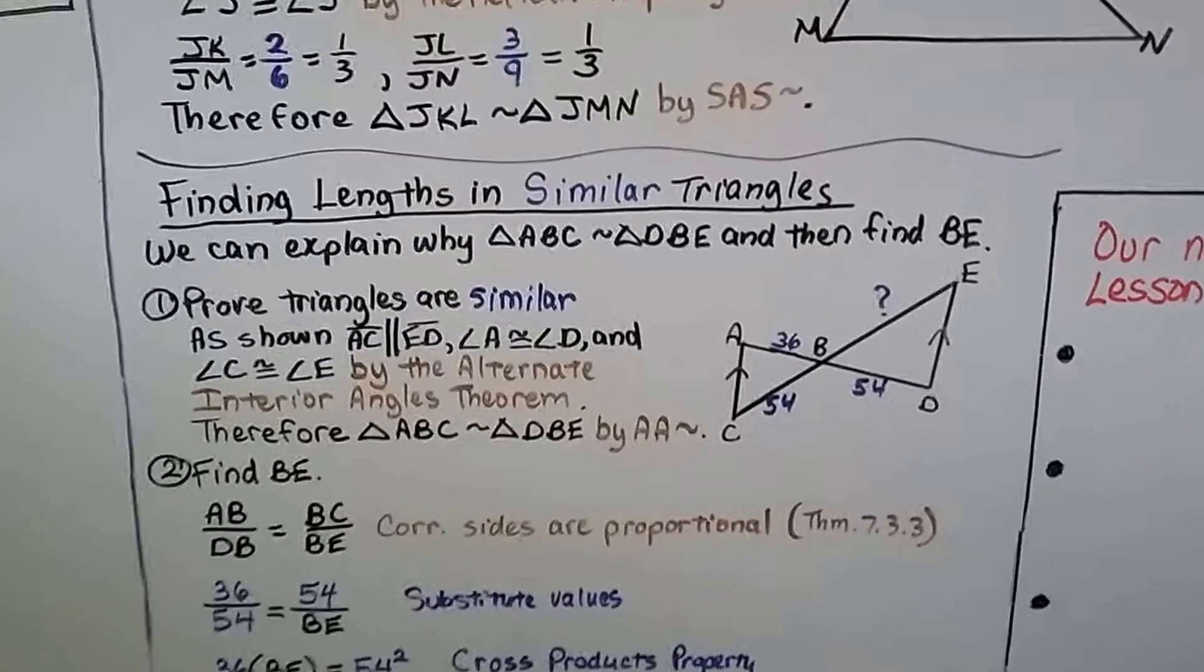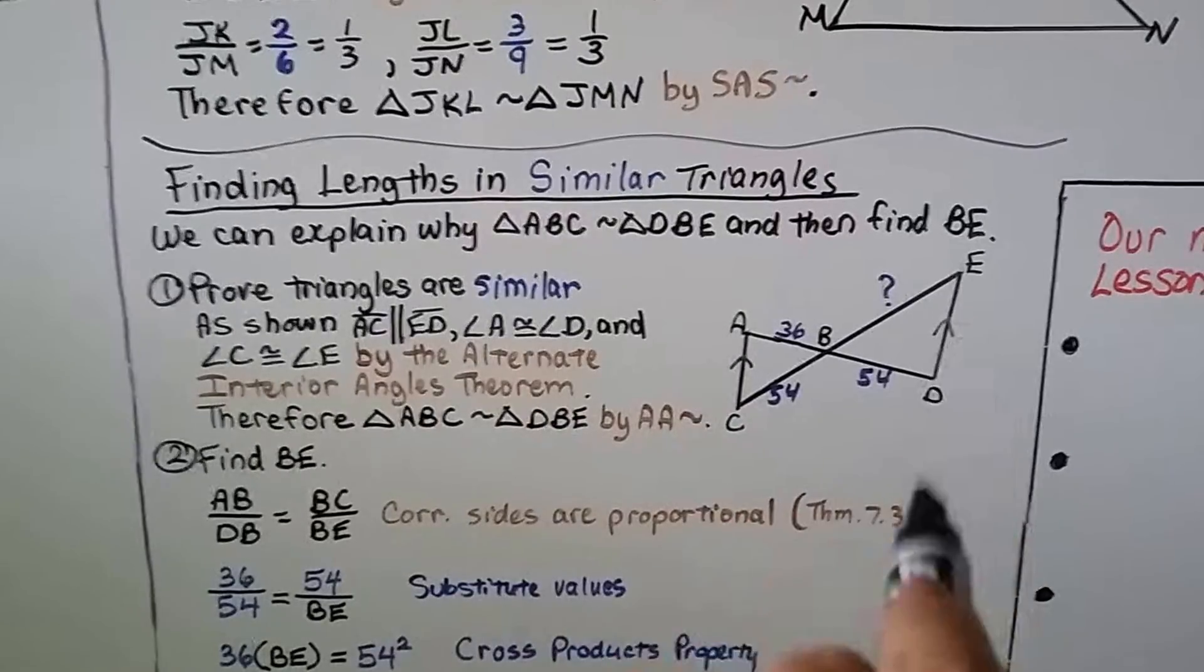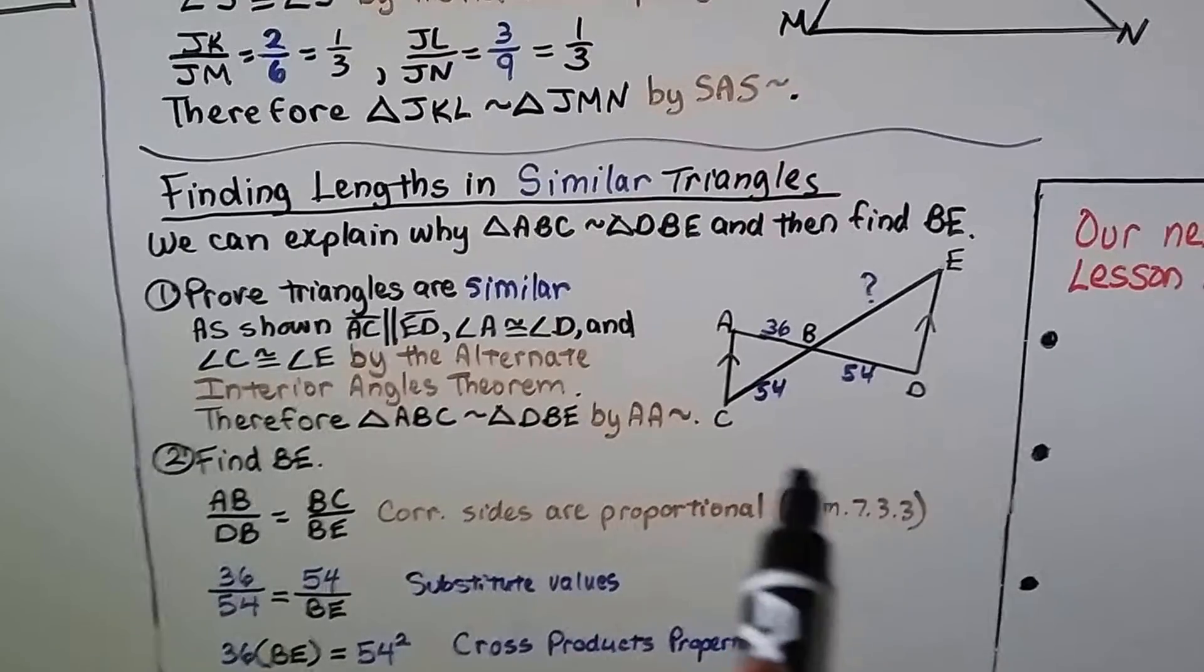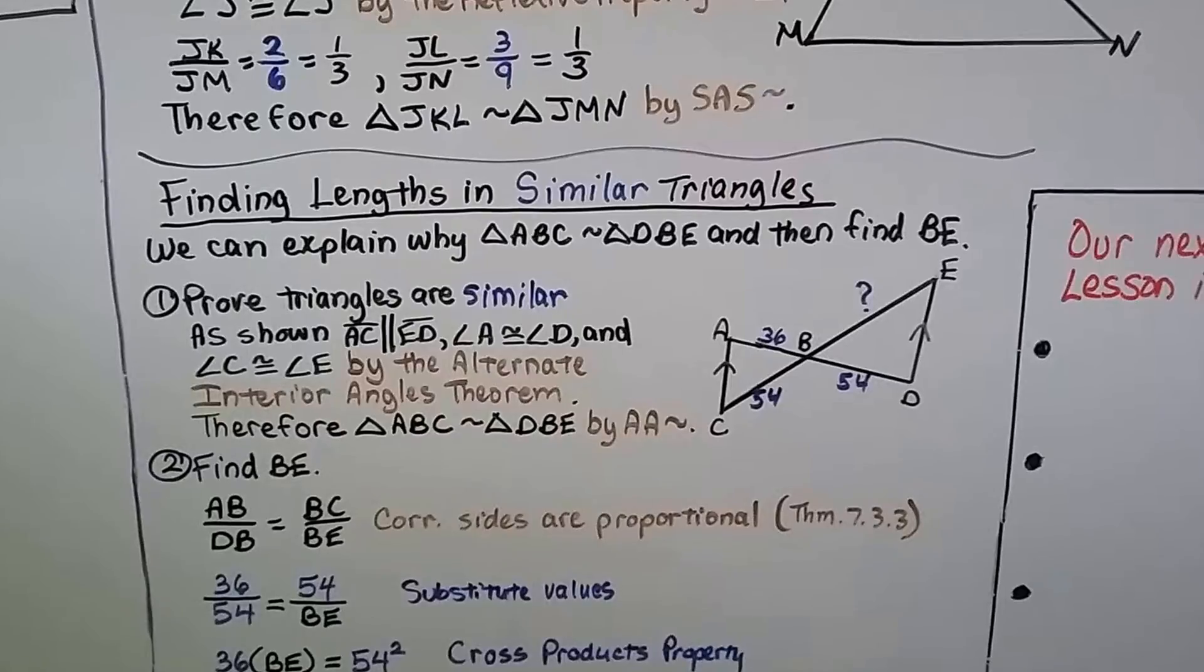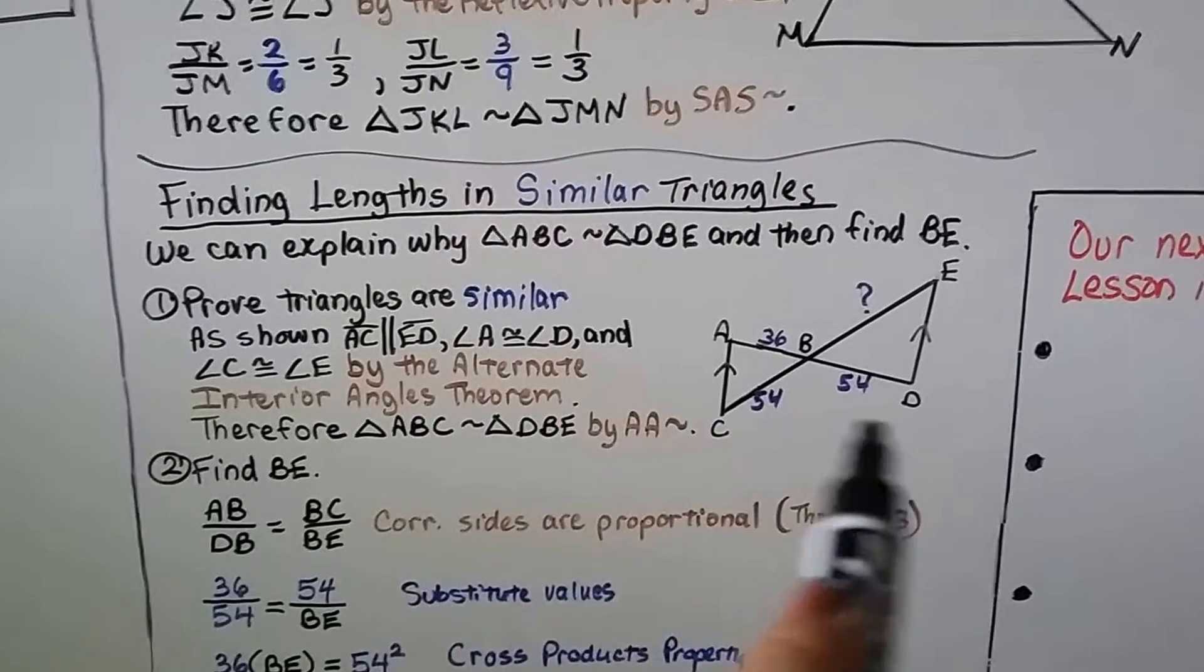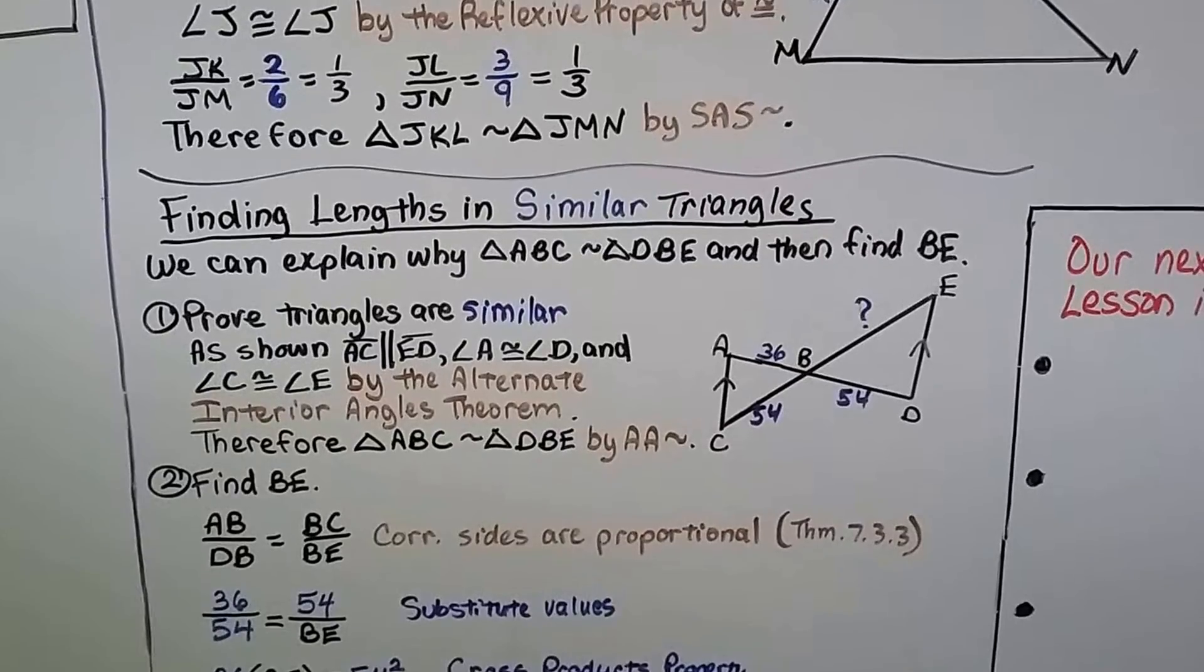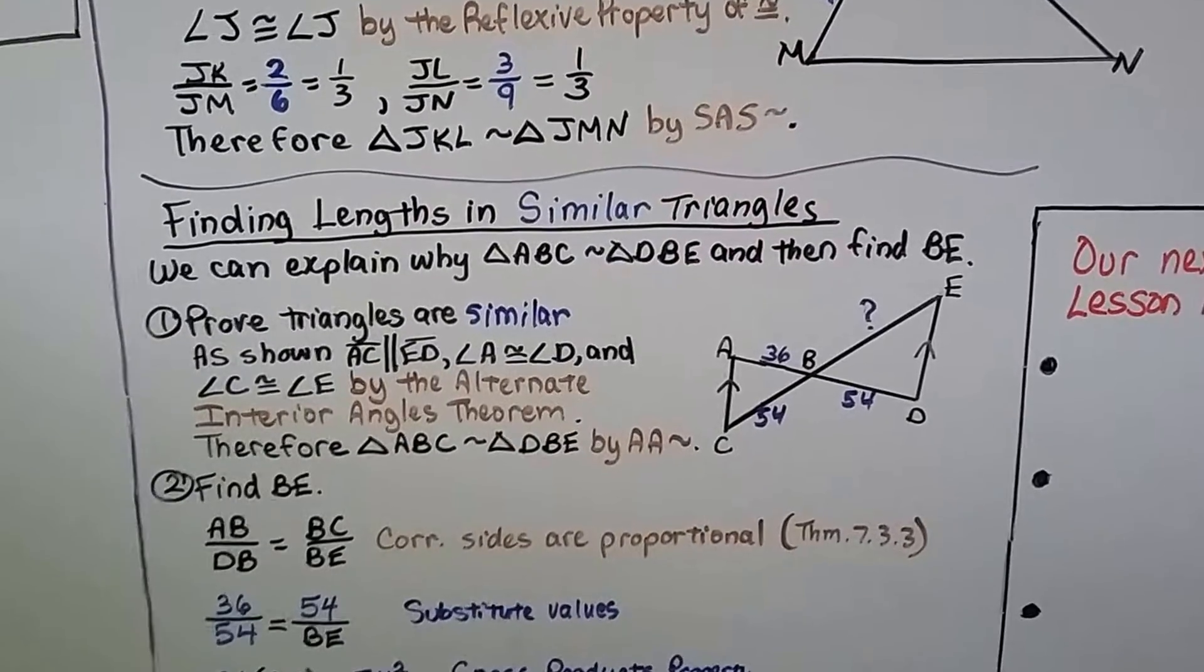The first thing we do is prove the triangles are similar. As shown, AC is parallel to ED, and angle A is congruent to angle D, and angle C is congruent to angle E by the Alternate Interior Angles Theorem. We could look at AD as a transversal or CE as a transversal. Therefore, triangle ABC is similar to triangle DBE by AA, angle angle similarity.